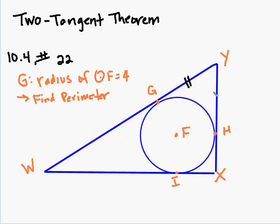So I'm going to mark this up. GY is congruent to YH. I know IX is congruent to XH. And by the two-tangent theorem I know WI is congruent to WG.